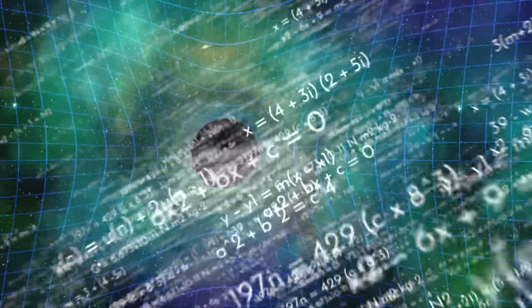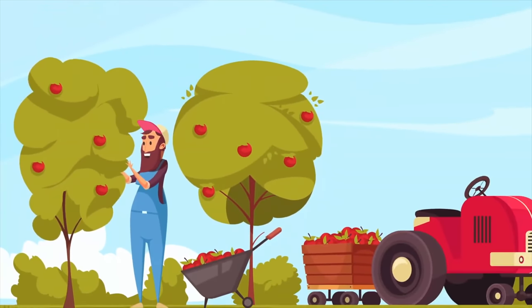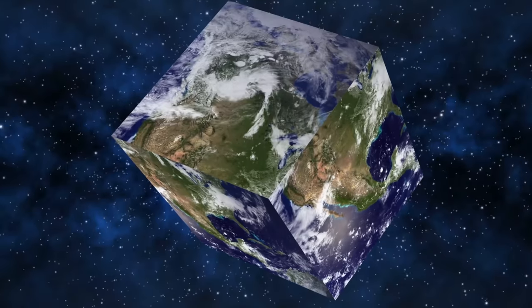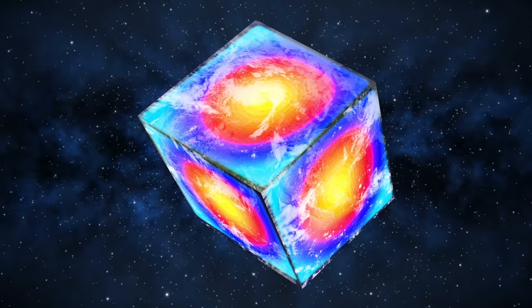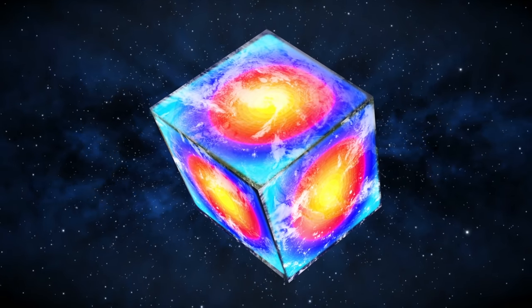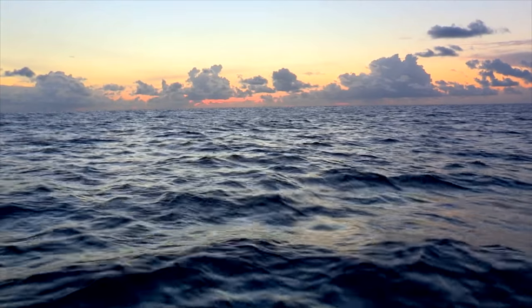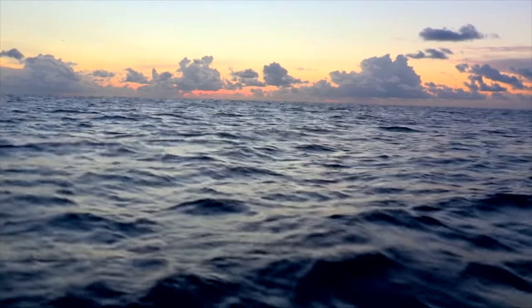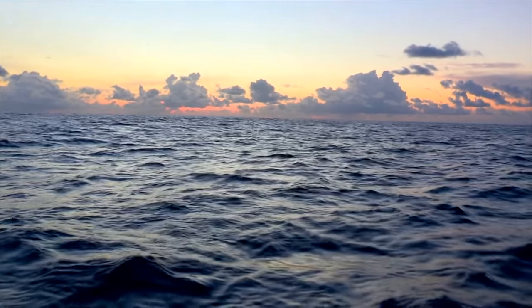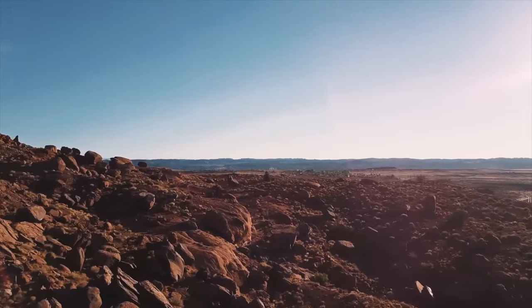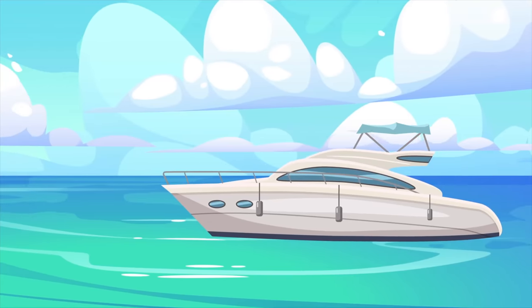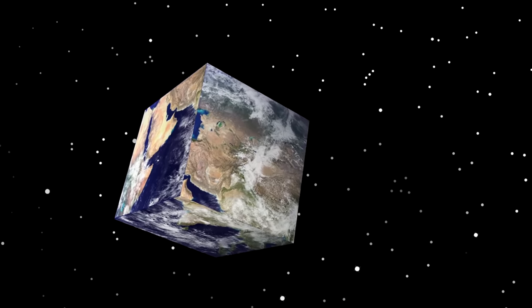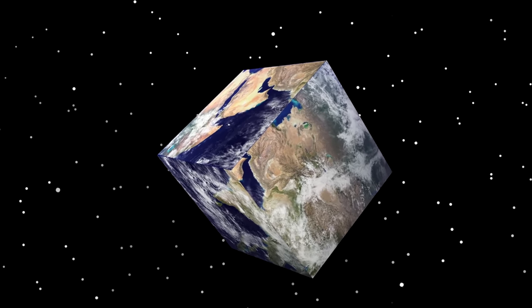If Earth was a cube, gravity would be strongest at the center of each face. That's because the force of gravity increases closer to the center of gravity. As a result, all water in our atmosphere would be drawn towards the center of the faces of Earth. This means the edges of the Earth would be barren rock with no atmosphere, while the center would be all water. Also, each face of the planet would have its own region with a totally different ecosystem.